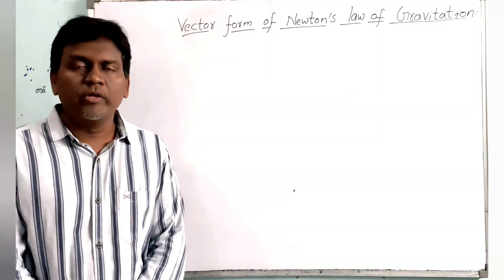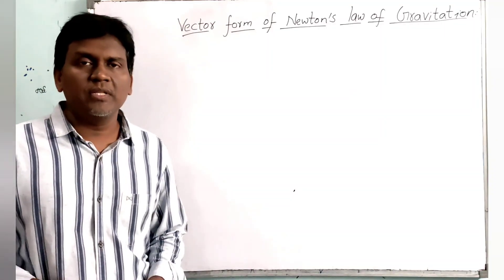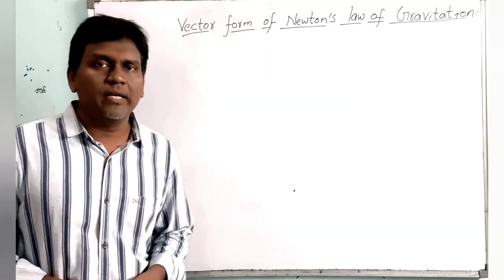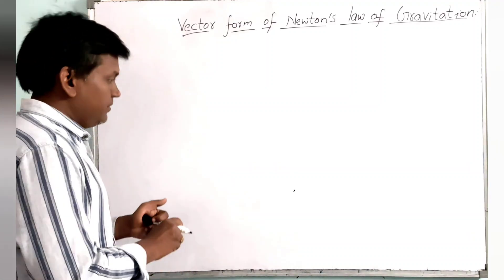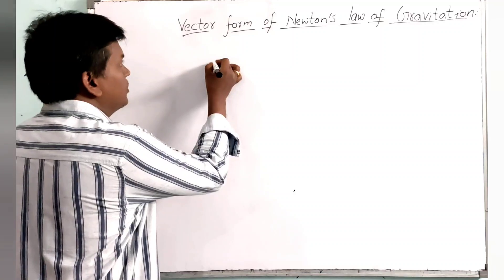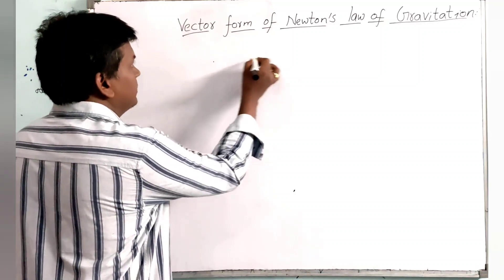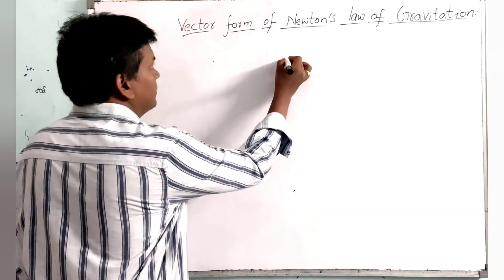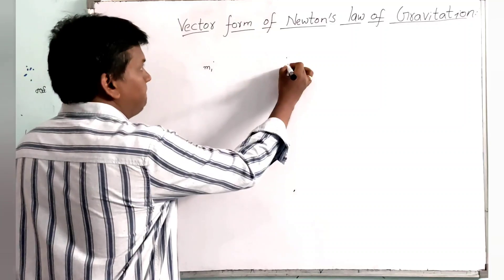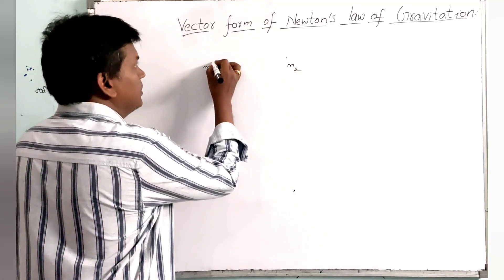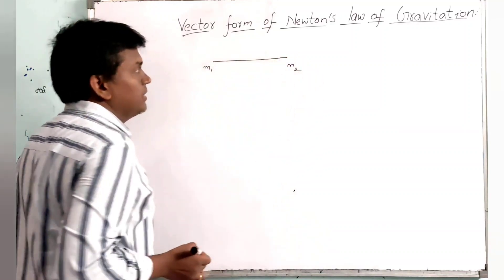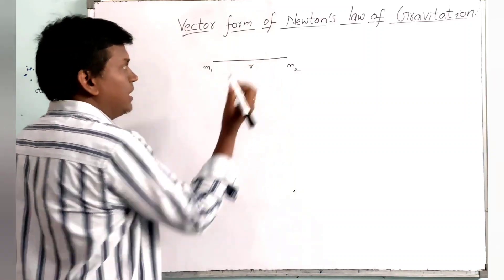In this class, we are going to discuss the vector form of Newton's law of gravitation. For that, we will consider two point masses, M1 and M2. These two point masses are separated by a distance R.